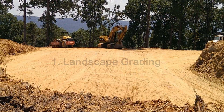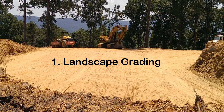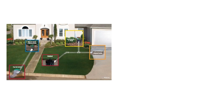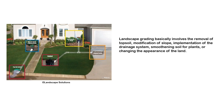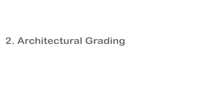Depending on the construction requirements, different types of site grading are performed. The first type is landscape grading. Landscape grading basically involves the removal of topsoil, modification of slope, implementation of the drainage system, smoothening soil for plants, or changing the appearance of the land. This is mainly performed for irrigation and gardening applications.